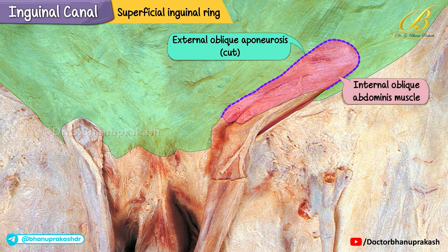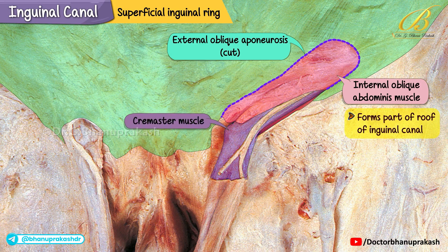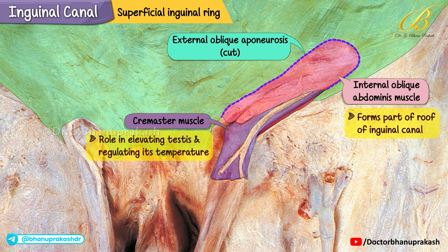By removing the external oblique aponeurosis, we can clearly see the internal oblique abdominis muscle lying underneath. This muscle forms an important part of the roof of the inguinal canal. Just beneath the internal oblique we can observe the cremaster muscle, which is actually derived from fibers of the internal oblique.